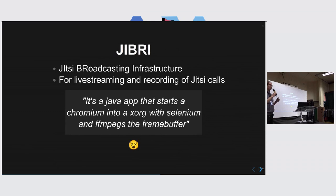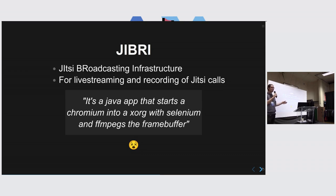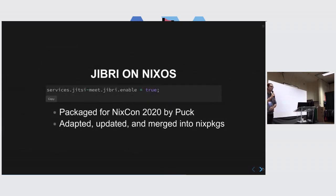One of the main things we worked on in Summer of Nix last year as participants was packaging Jibri. Jibri is Jitsi broadcasting infrastructure — a separate component which someone on the NixOS IRC concisely described as a Java app that starts Chromium using Xorg with Selenium and then FFmpegs into the frame browser. It's a pretty convoluted software setup. From FFmpeg it can either save the recording local to disk, upload it, or live stream it to something like PeerTube. The instructions to manually do that are pages of setup. On NixOS with it packaged as a module, it's literally one line and the whole thing is running.